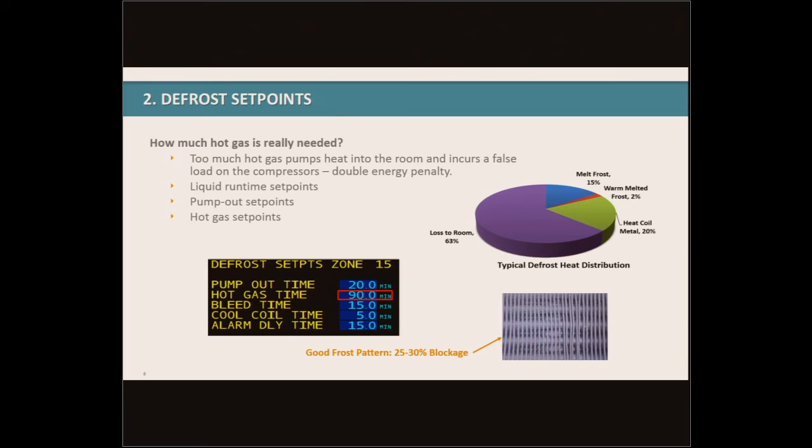So a couple red flags to look for here. In the control system screen, you see this is a red flag with the 90 minutes of hot gas. Typically, if a hot gas cycle is over 20 to 30 minutes, that's a red flag that there's some other issue that needs to be addressed. And by no means 90 minutes would be needed for a hot gas. The other photo we have here is for a good frost pattern. Evaporators will build frost. Having frost on an evaporator is not a bad thing. We just need to make sure that we limit how much frost is built onto the evaporator before we send it into a defrost. So a good rule of thumb is observe the evaporator. And once 25 to 30% of the spacing between the fins is occupied by frost, that's a good initiation to start the defrost cycle.